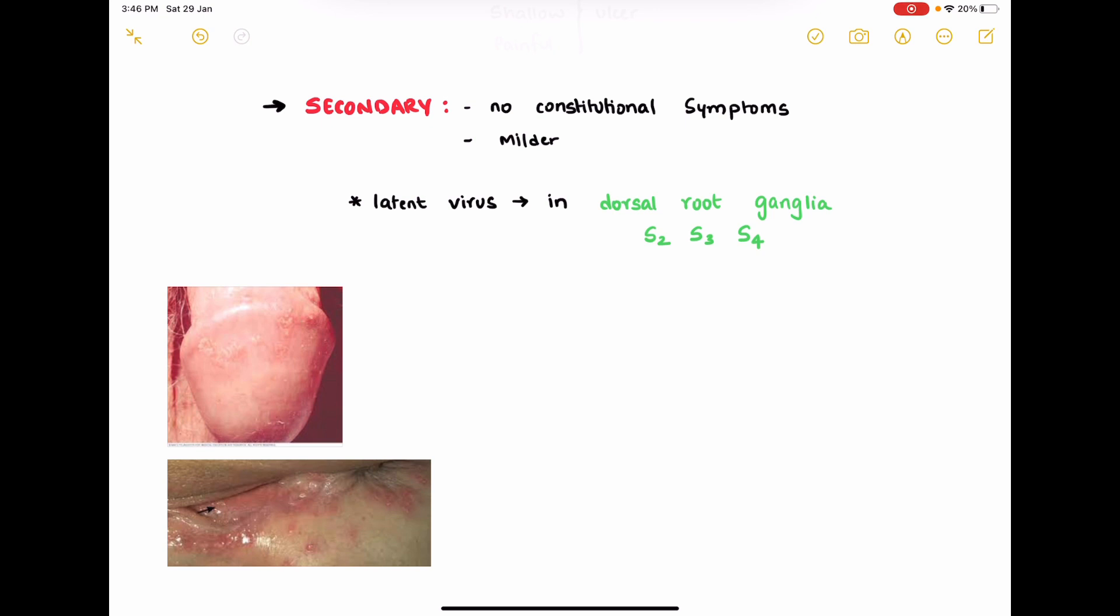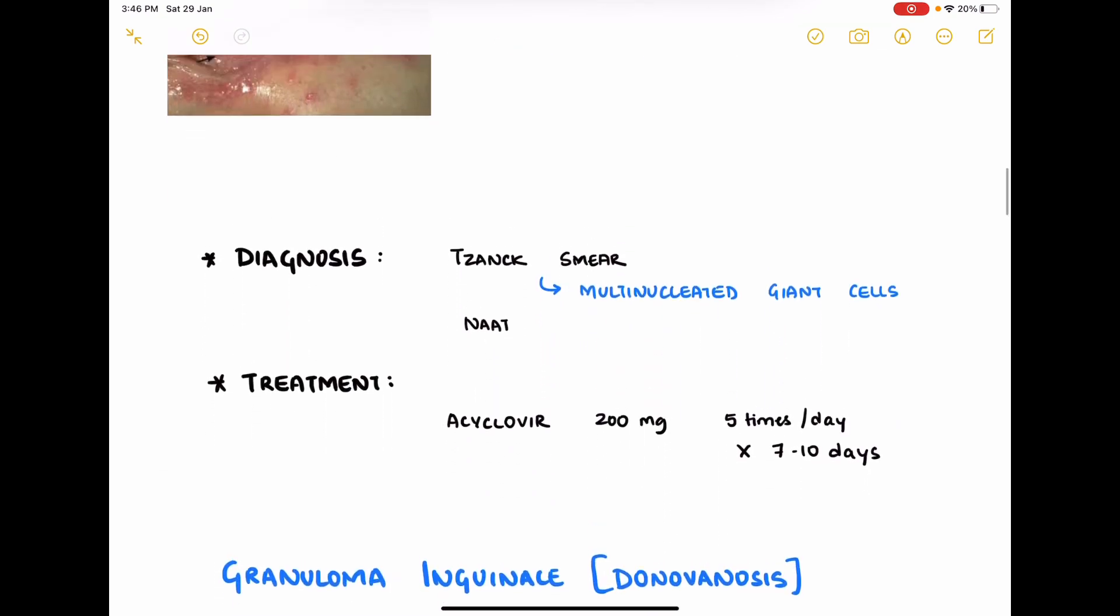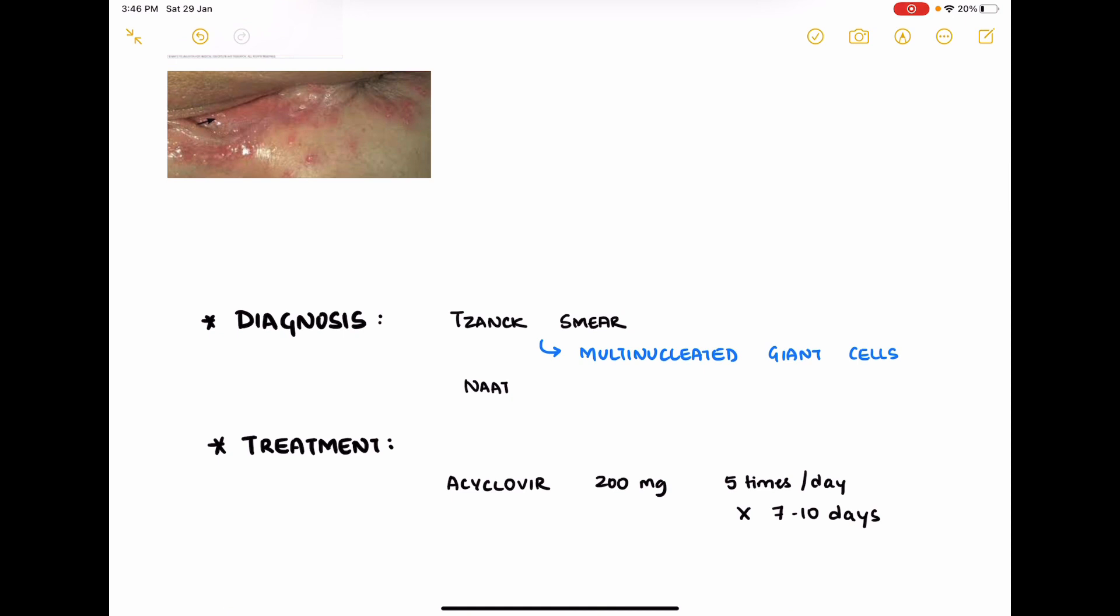Diagnosis is done by taking a smear from the vesicles and doing a Tzanck smear where you'll see multinucleated giant cells. Nucleic acid amplification test can also be used. Treatment for herpetic ulcers is oral acyclovir 200 mg five times a day for seven to ten days. Intravenous acyclovir can be used in severe conditions.